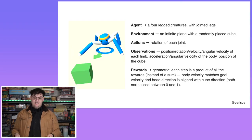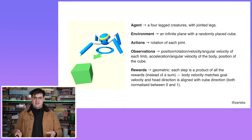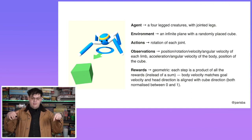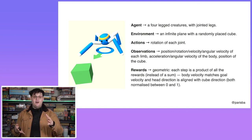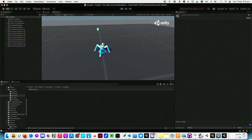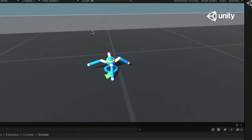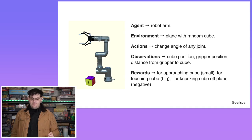Here's an even more complex one — a four-legged creature with jointed legs on an infinite plane with a randomly placed cube. Its actions are rotating each joint — lots of joints, no animation walk cycle, nothing like that. Its observations are the position, rotation, and angle of each limb, the acceleration and angular velocity of the body, and the position of the cube it wants to get to. It gets a geometric reward — a product of all rewards — when body velocity matches the goal and head direction is aligned with the cube. If it's pointed at the cube and moving towards it, it gets rewarded. Eventually this thing learns to move its limbs and walk towards the cube goal. Here's that little crawler in Unity — it seeks that cube. There's also a robot arm that can pick up a cube.